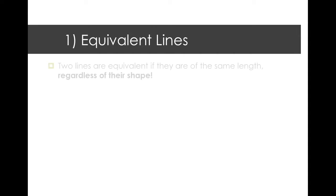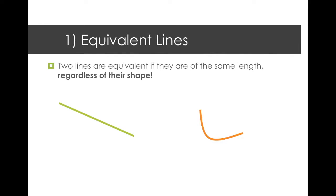Equivalent lines. Two lines are equivalent if they are of the same length, regardless of their shape. So here's a straight line, and the orange is an arc. But if I tell you that both of them are 18 centimeters, even though they don't look the same, they're still considered equivalent.